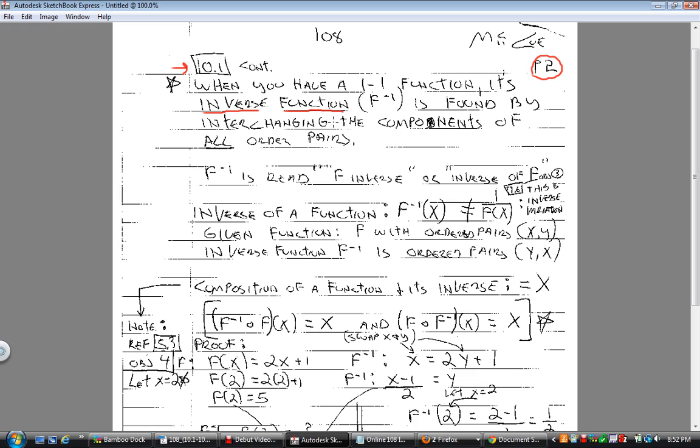To help us with our notation we are going to use the symbology of little f raised to the negative 1. The question could be asked: how do you find an inverse function? One method of doing it is to interchange all the components of the ordered pairs. So the idea here is that if you're given a function with ordered pairs x comma y, the inverse function is found by simply swapping the x and y coordinate positions.